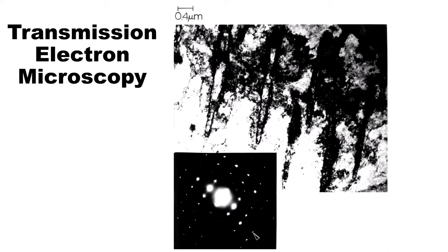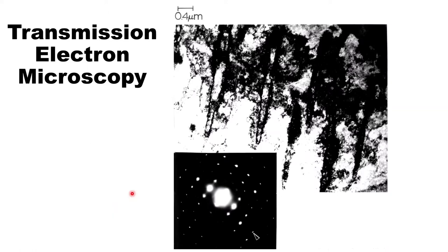All right everybody, we've gotten to the point in this course where we're talking about transmission electron microscopy. The picture in front of you is a transmission electron micrograph of copper. We have two bits of information here: our bright field image and our diffraction pattern. We take advantage of electron diffraction a lot of times when we do TEM, and using these two bits of information together we can learn a lot about a material.